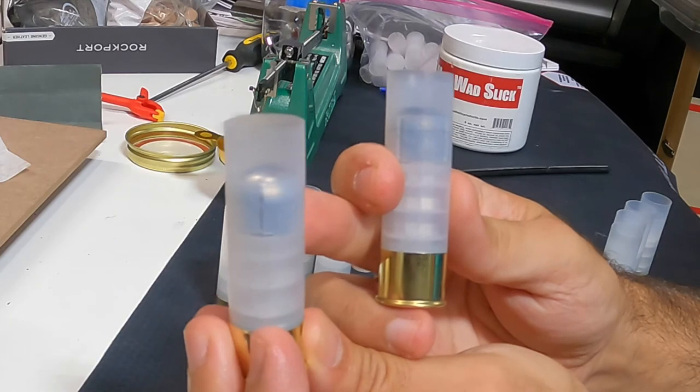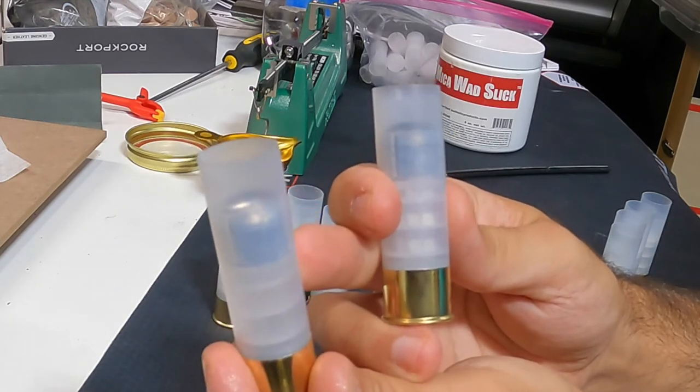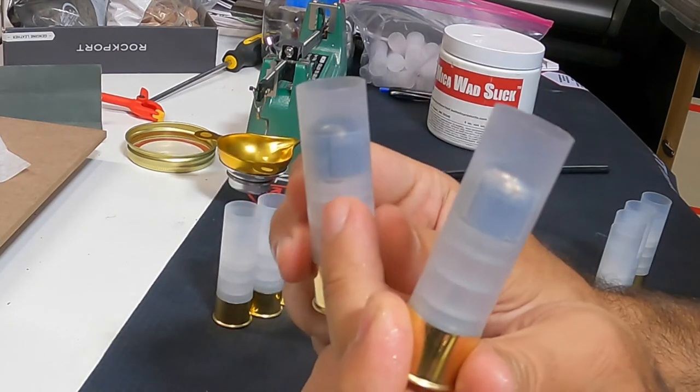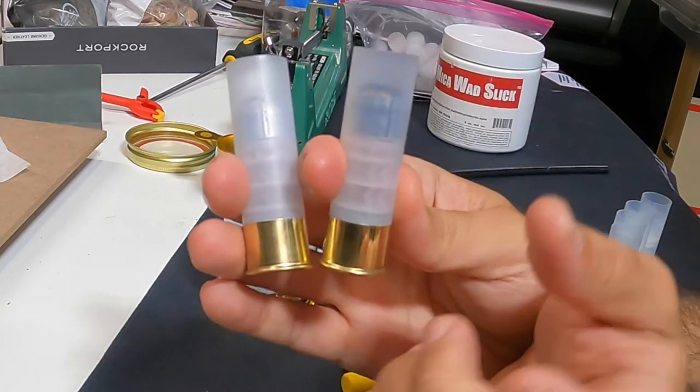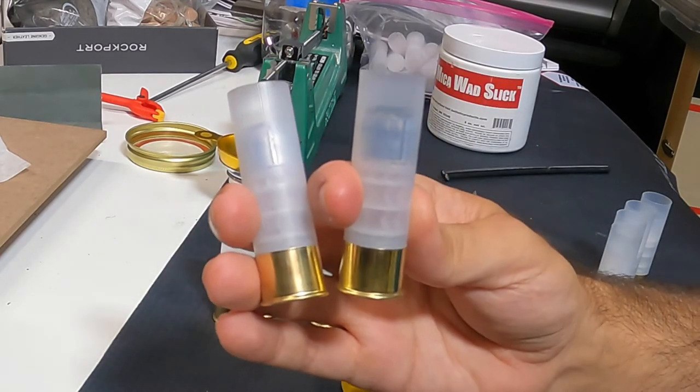...with no nitro card, just sitting in the wad. It's a little difficult to see but on this one I got a nitro card. So I'll crimp both of these with the Lee load all and then we'll see which one comes out better.